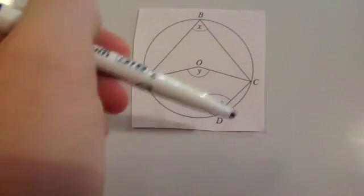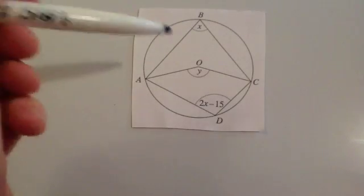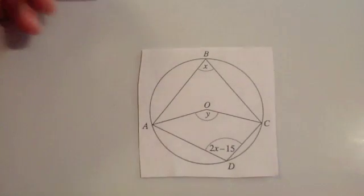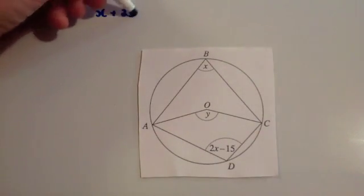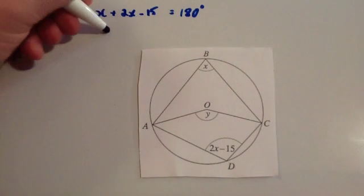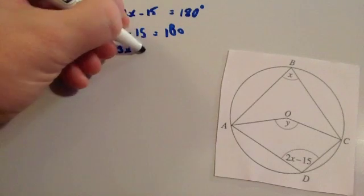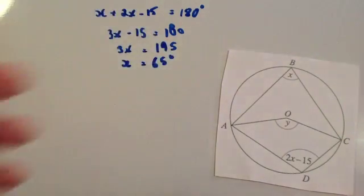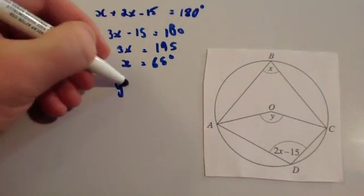Here we have a cyclic quadrilateral and an angle at the centre with an angle at the circumference, so Y will be double X. First work out X: opposite angles in a cyclic quadrilateral add to 180, so X plus (2X minus 15) equals 180. Simplifying: 3X minus 15 equals 180; add 15 to get 3X equals 195; divide by 3 to get X equals 65 degrees. Since Y is the angle at the centre, Y equals double 65, giving Y equal to 130 degrees.